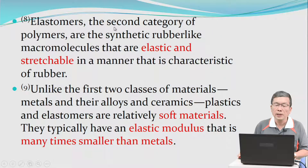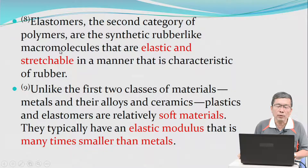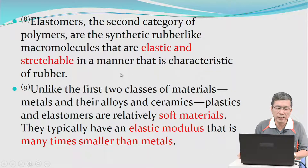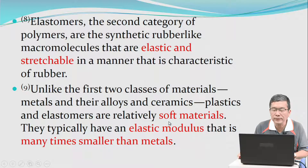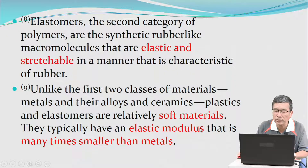Elastomers are the second category of polymers — synthetic rubber-like macromolecules that are elastic and stretchable in a manner that is characteristic of rubber. Unlike the first two classes of materials, metal and their alloys and ceramics, plastic and elastomers are relatively soft materials. They typically have an elastic modulus that is many times smaller than metals.